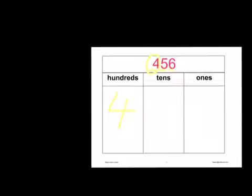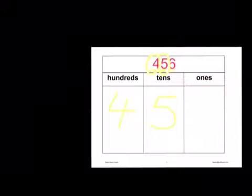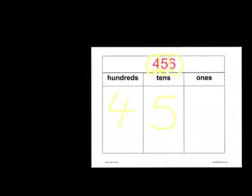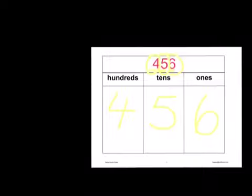How many tens are in this number? Remember, that's the middle column. Five. Five tens. How many ones? Remember, that's the last column there. Six. So the number we have is 456.